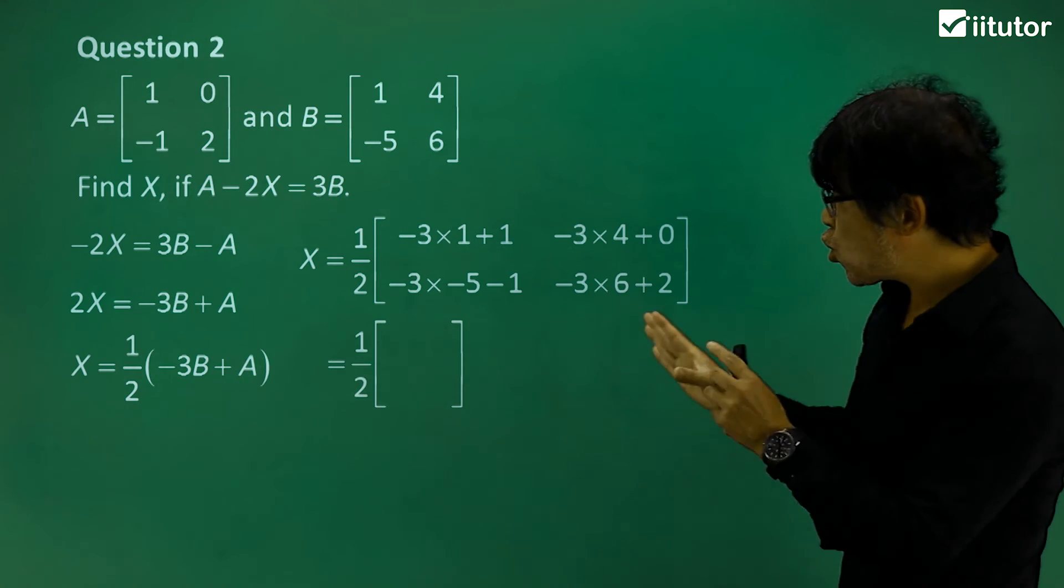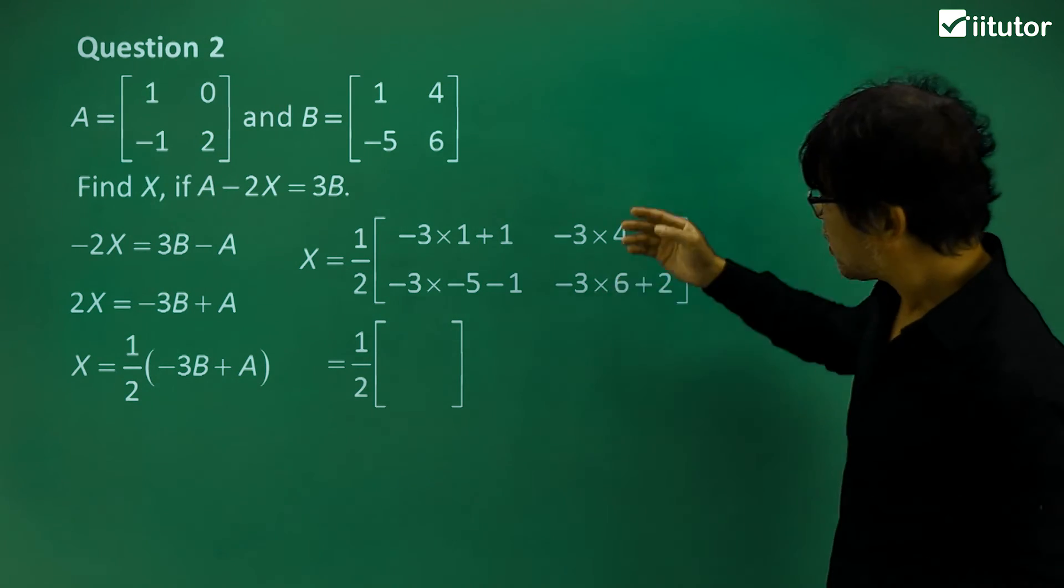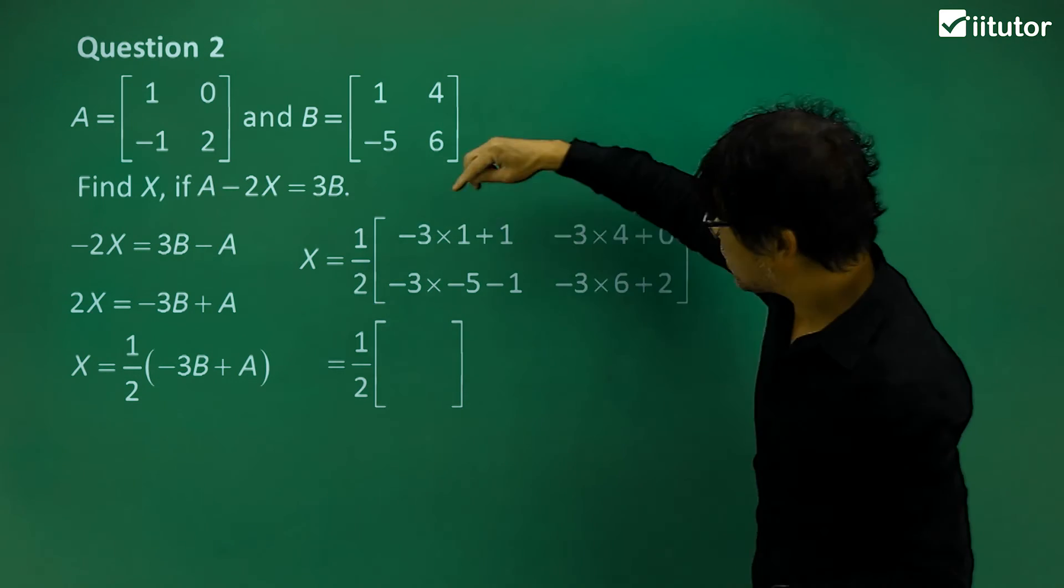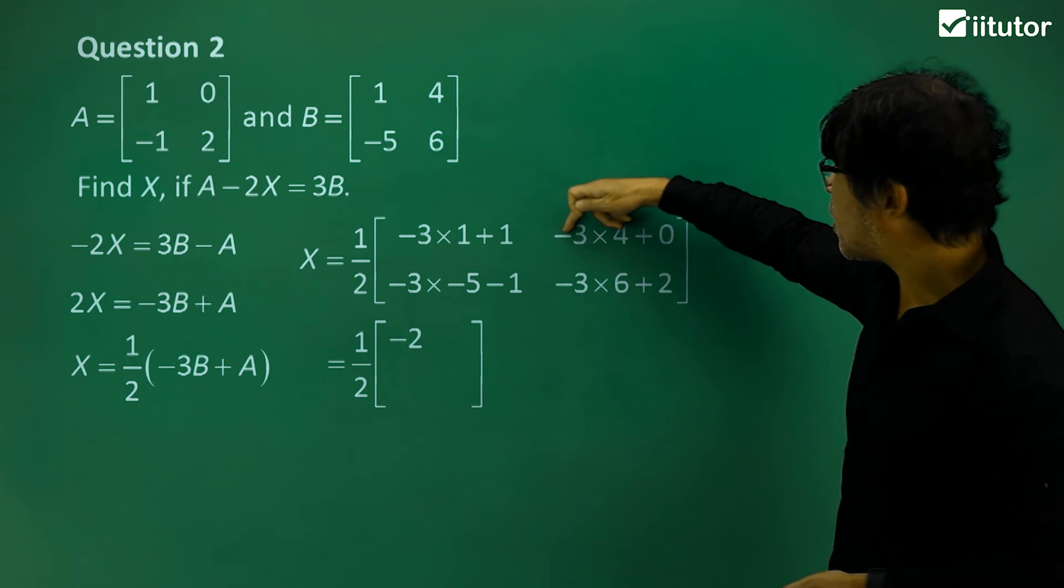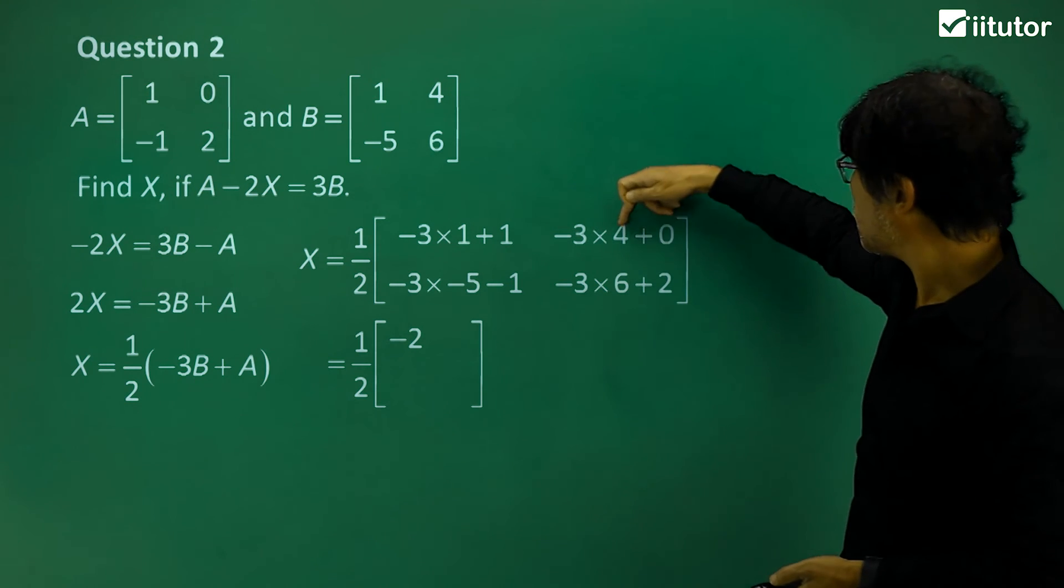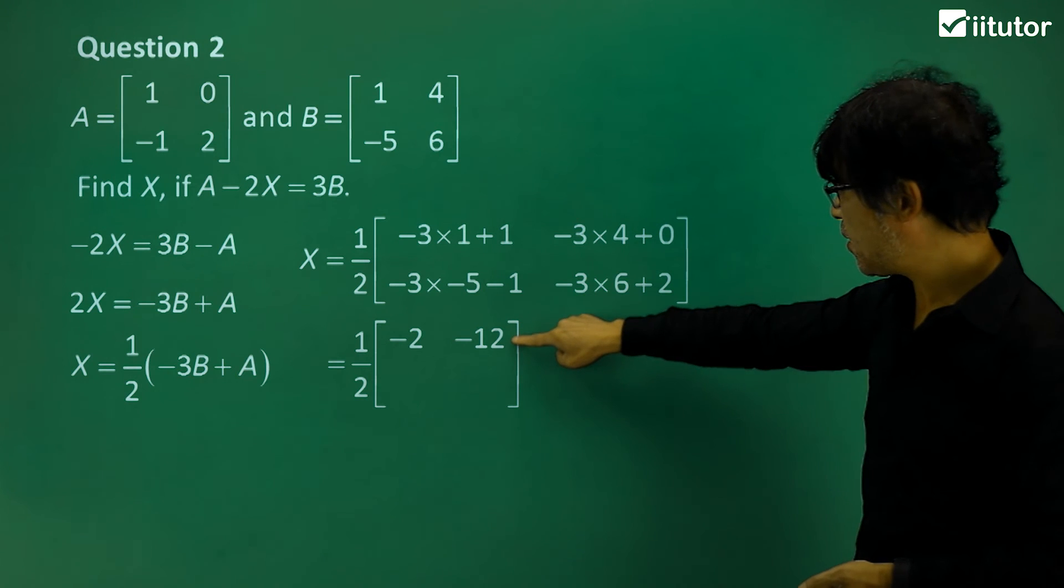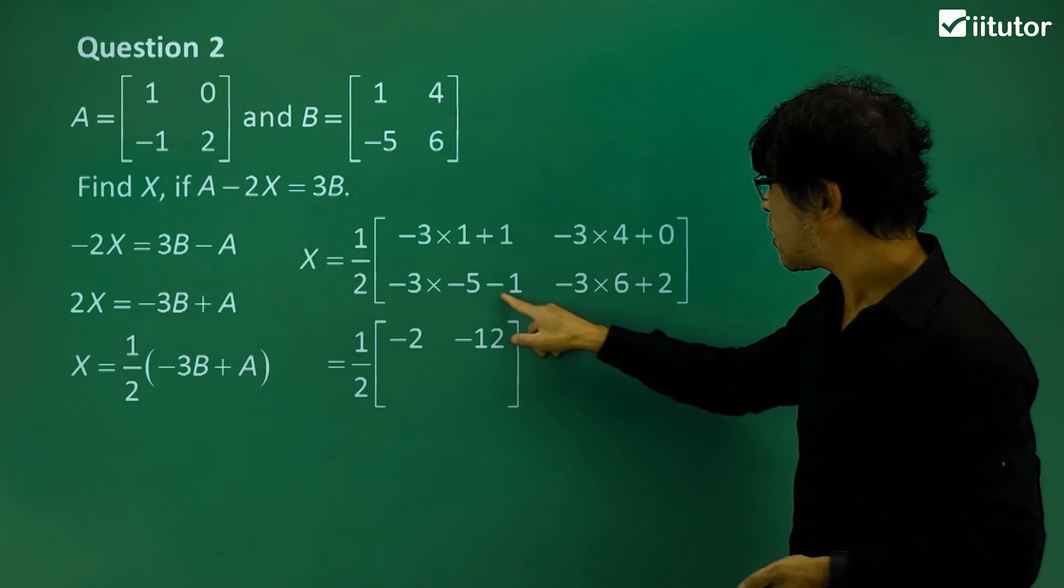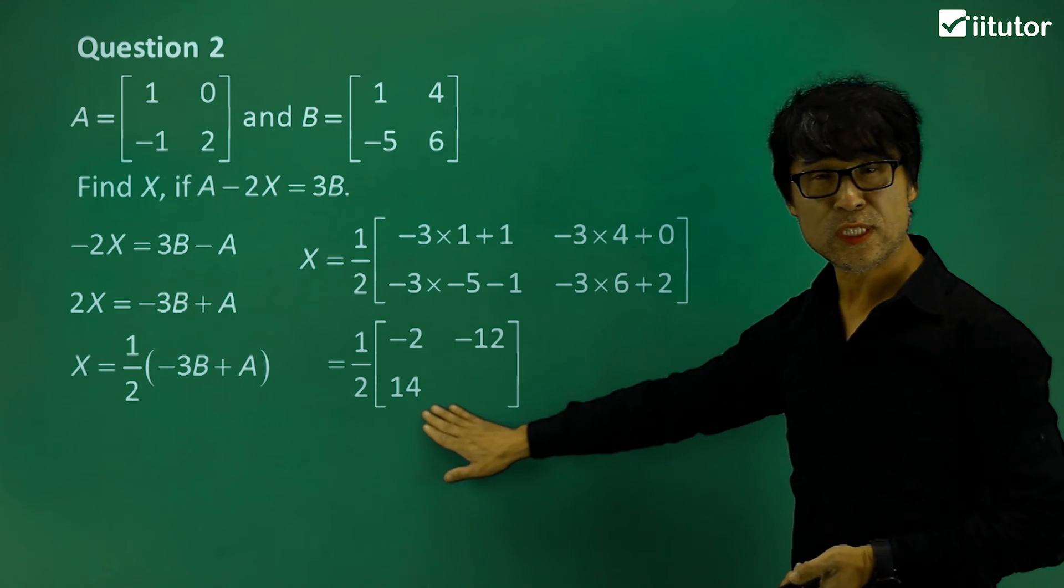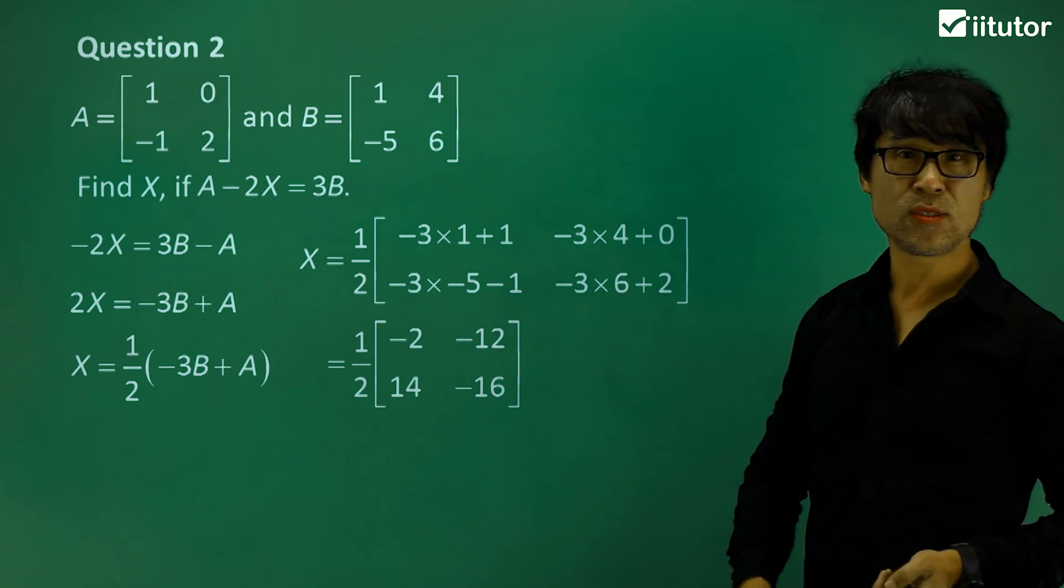So write your form of the matrix. So before you do anything here, what is it? Negative 3 times 1 plus 1? Negative 2. Negative 3 times 4 plus 0, which is negative 12 over here. And then what else? Negative 3 times negative 5 plus, sorry, minus 1 is 14. And then negative 16. You get it, guys.